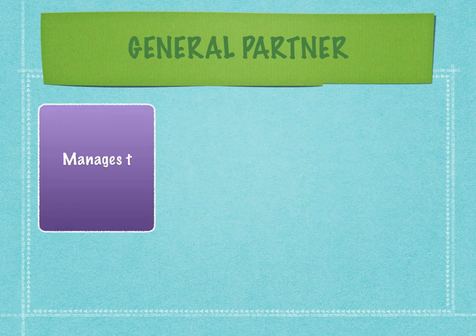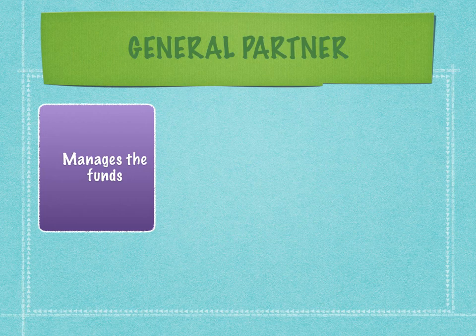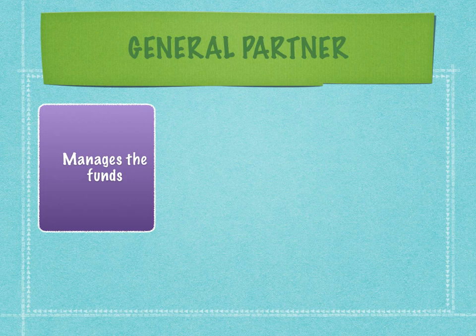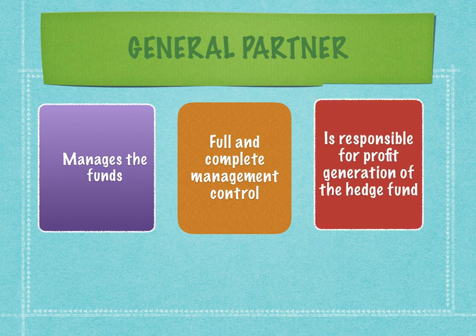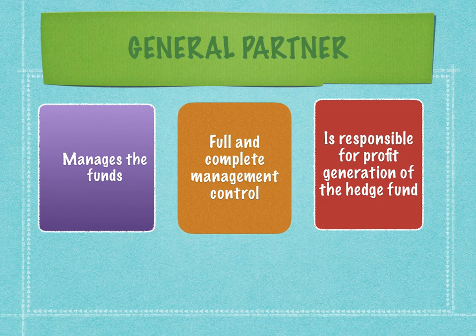The general partner manages the fund. The general partner is the operating entity — they set up the fund, construct it according to the asset management company, take necessary approvals, run the show, appoint the fund manager, the team, the transfer agent, the custodian, etc. The general partner has full and complete management control, and in many cases is also the one who makes the maximum capital contribution into the hedge fund. Because they bring in such a large amount of capital, the other partners also get convinced about the uniqueness of the hedge fund and make their own investments.